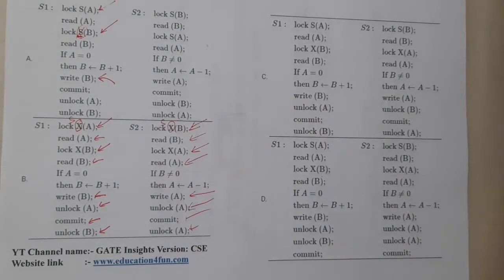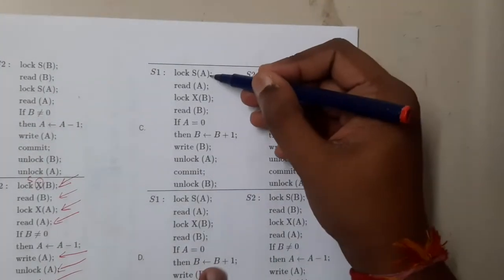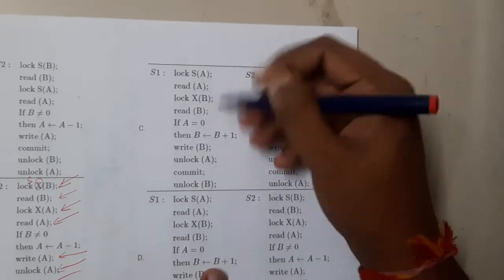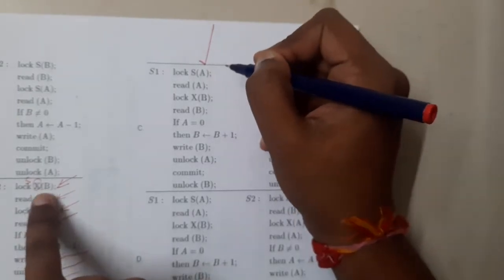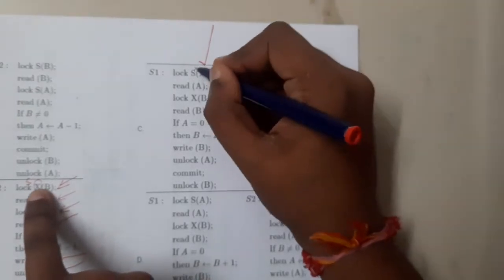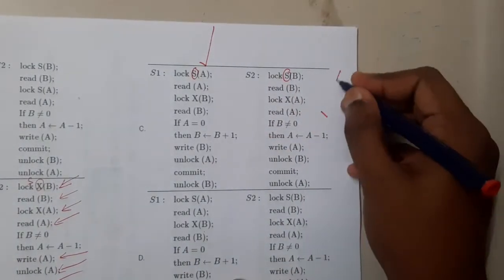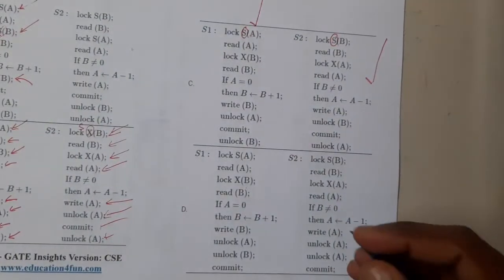Moving on to option C: shared lock on A, exclusive lock on B. This is what I exactly want because here he is locking that with exclusive lock. Shared lock is a good option, here also. So basically these two options are absolutely correct. The same code, the only thing is he is changing this lock appearance.